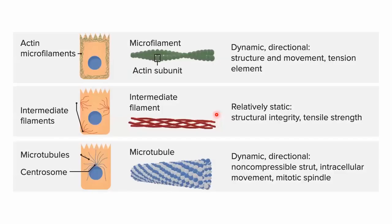There are three types of cytoskeletal filaments: actin microfilaments, intermediate filaments, and microtubules. Actin microfilaments are made of actin protein, microtubules are made of tubulin protein, and intermediate filaments are made of intermediate filament proteins. Actin filaments are dynamic, directional with polarity (plus and minus ends), and help in cell movement. Intermediate filaments are relatively static and provide structural integrity and high tensile strength to the cell.